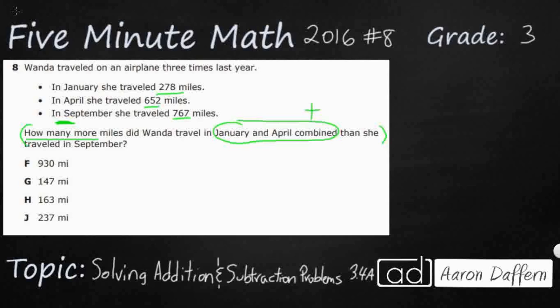So January is, I'm going to write it right underneath, 278. And we're going to add that to April, 652. That's going to be the beginning of our number sentence. I'm not going to attempt to add that horizontally. I'm going to go ahead and add it vertically here using our standard algorithm.